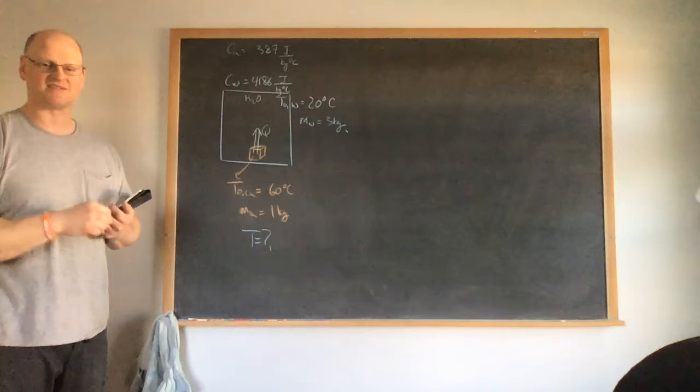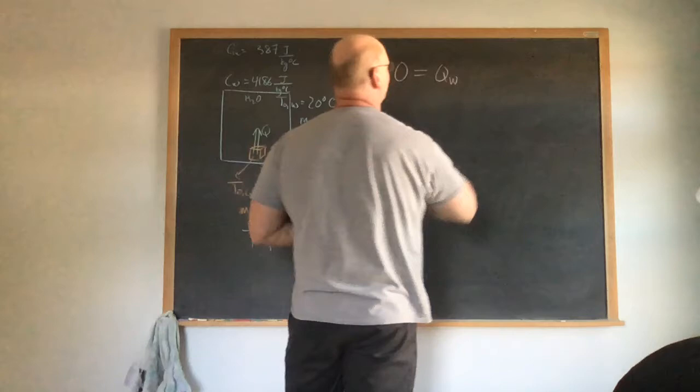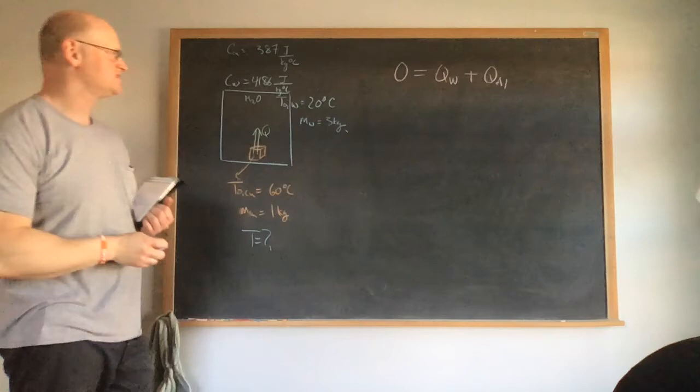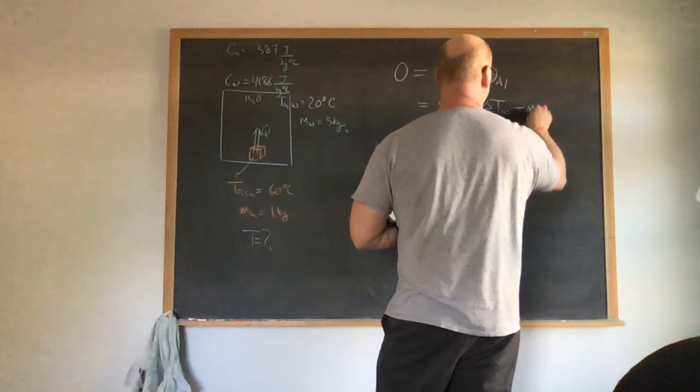Now let's solve the problem using calorimetry. Since the system is thermally isolated, net Q equals zero: Q_water plus Q_copper equals zero. There is no phase transition, so we use specific heat only. This gives us: mass of water × specific heat of water × ΔT_water, plus mass of copper × specific heat of copper × ΔT_copper, all equal to zero.